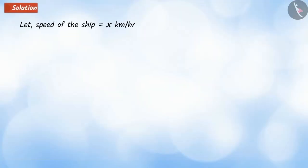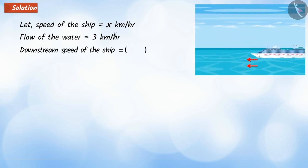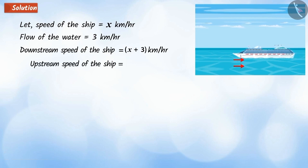First, let's assume that the speed of the ship is x km per hour. According to the example, the flow of water is 3 km per hour. Where the speed of the ship favorable to the stream is equal to x plus 3 km per hour and the speed of the ship unfavorable to the stream is equal to x minus 3 km per hour.